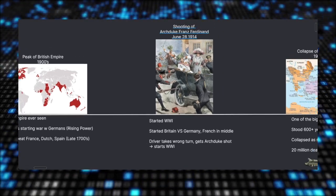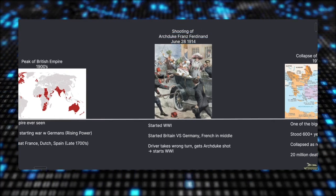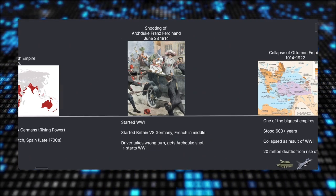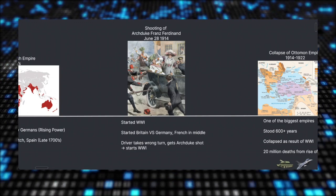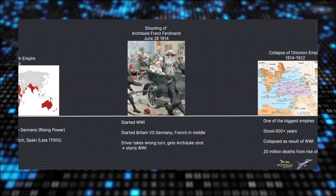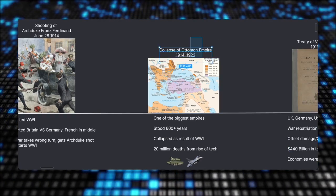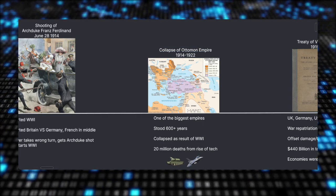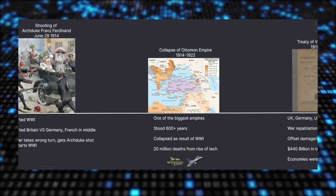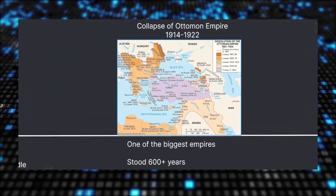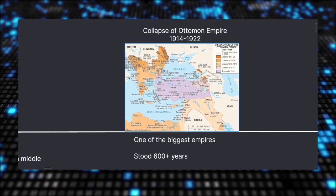Let's go to June 28th of 1914 — the shooting of Archduke Franz Ferdinand. The driver actually took the wrong turn and Archduke got shot, and this is what started World War I. Part of WWI we saw was the collapse of the Ottoman Empire, another one of the largest empires that had stood for a good 600-plus years. Here we can see some of the countries that were part of the Ottoman Empire and the progression of its fall.